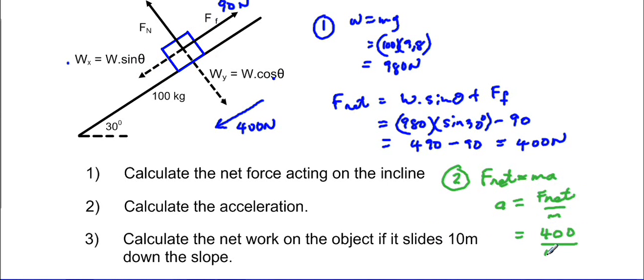And our mass is 100 kilograms which is given. And 400 divided by 100 will give us 4 meters per second squared.